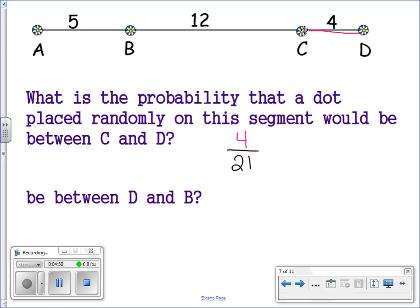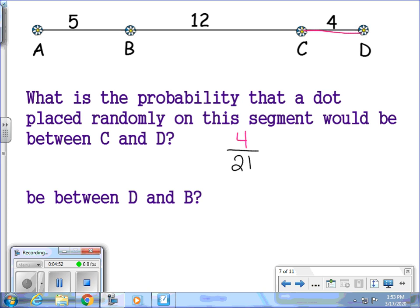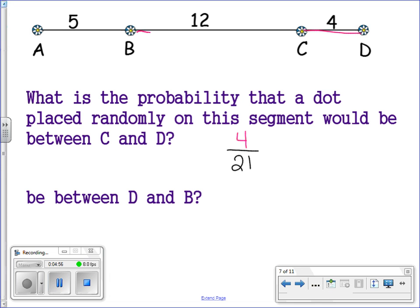How about between D and B? Well, D and B is this entire segment. So here, we are going to have to add up 12 and 4. Well, 12 plus 4 is 16. So 16 is going to go in my numerator, divided by the total length, which we already found in the previous answer, which is 21.